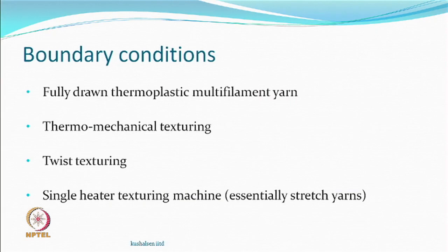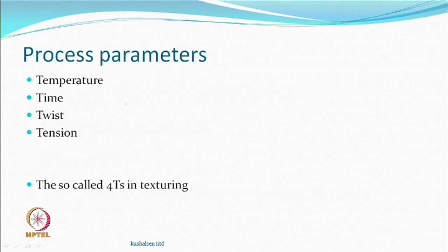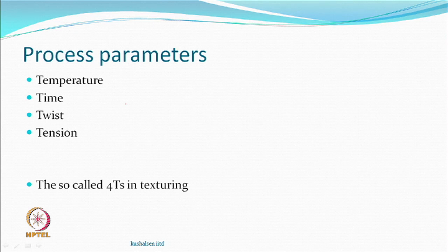We are talking about fully drawn material, because one which is fully drawn behaves in a different way. Of course, these are thermoplastic, thermomechanical, twist texturing on single heater machines. If you look at the process parameters, there are four T's of texturing: temperature, time, twist, and tension. You have the possibility of changing any one of these on the machine and therefore optimize the process.